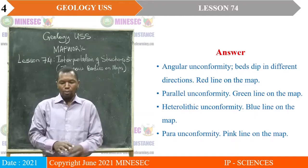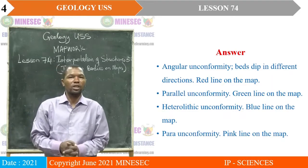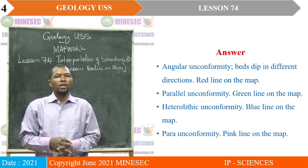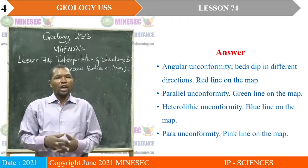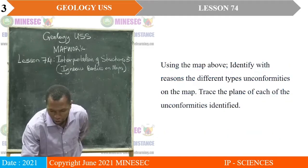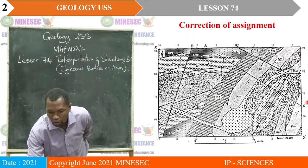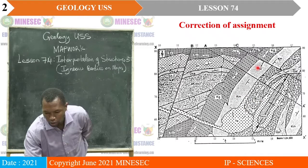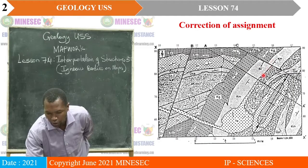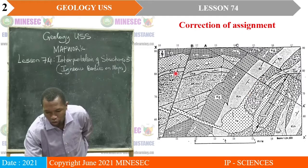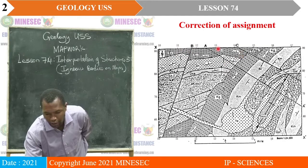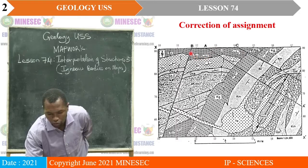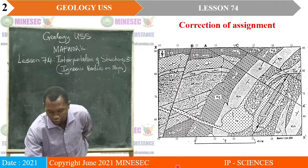Then we also have parallel unconformity, given by the green lines on the map. Our parallel unconformity is shown where we have this contact — this is the contact of an unconformity. We also have this other contact on the map where the limestone beds have two different dips, which is also another plane of unconformity.